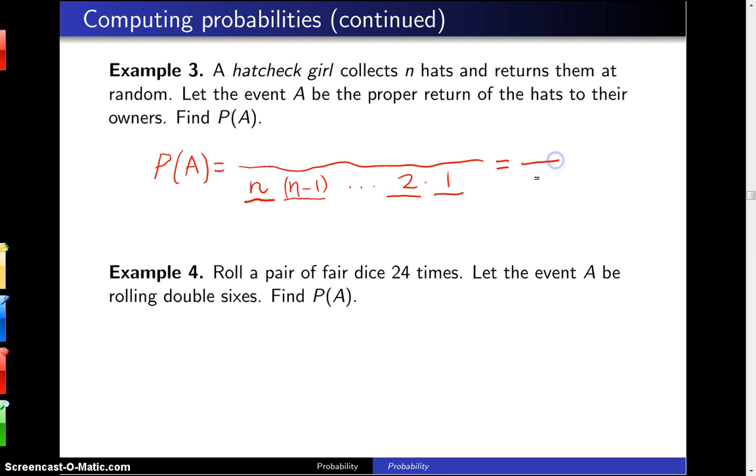So we've got N factorial different ways the hats can be returned. In the numerator, we look at the number of those N factorial ways that corresponds to the hats being returned correctly.